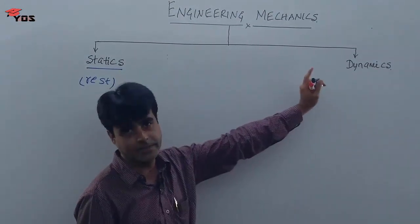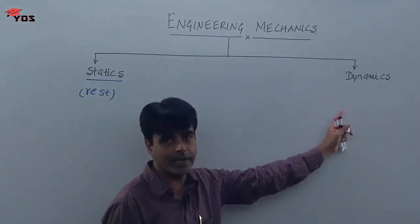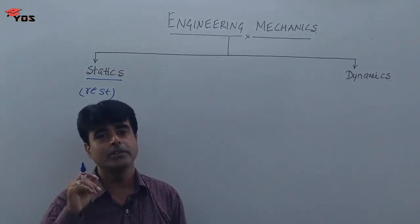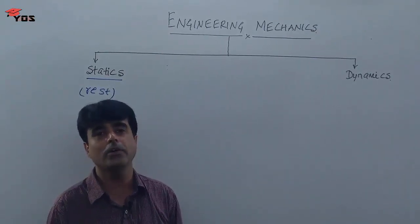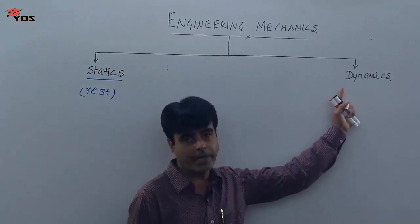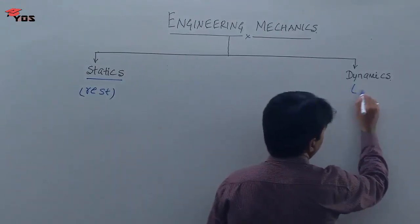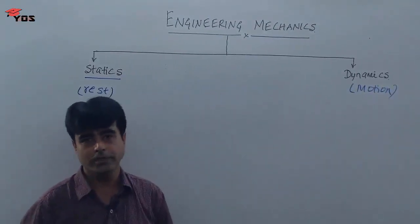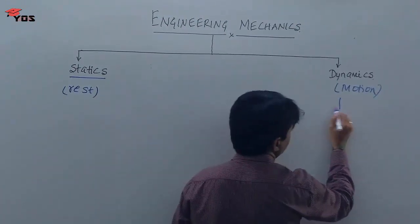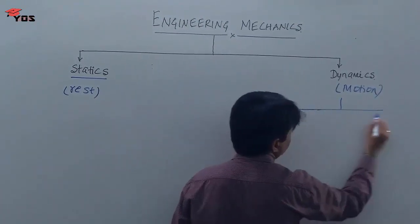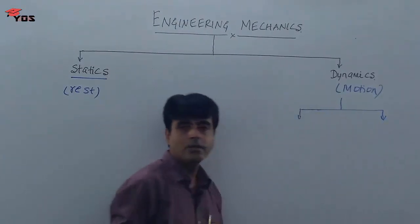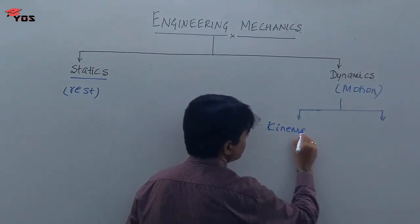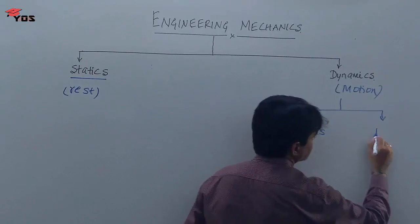Engineering mechanics is broadly classified into statics and dynamics. In statics the body is at rest. If you take a vehicle that is in motion and study the forces and their effects on that moving body, that comes under dynamics. Under dynamics, there are two types: kinematics and kinetics.